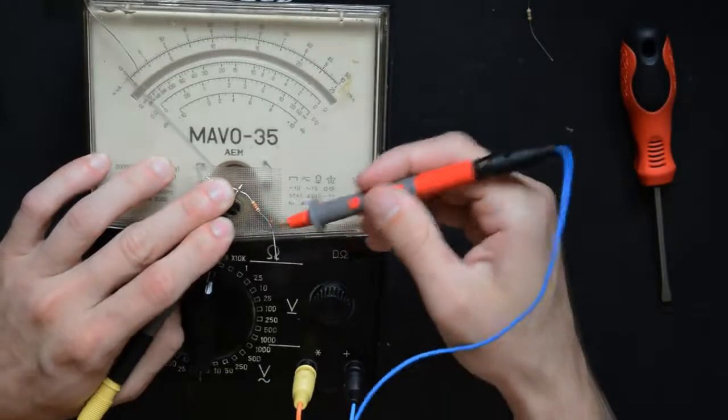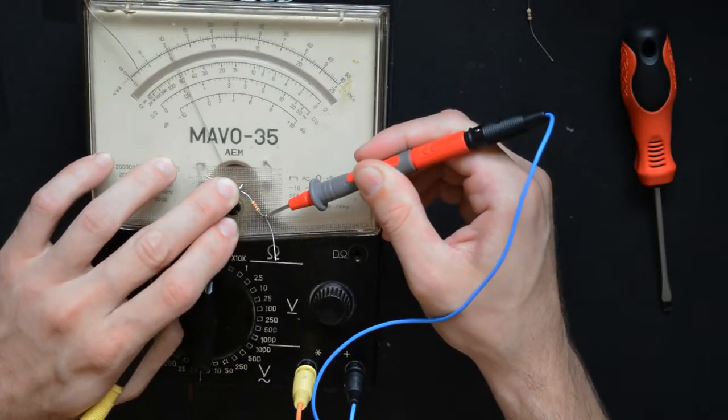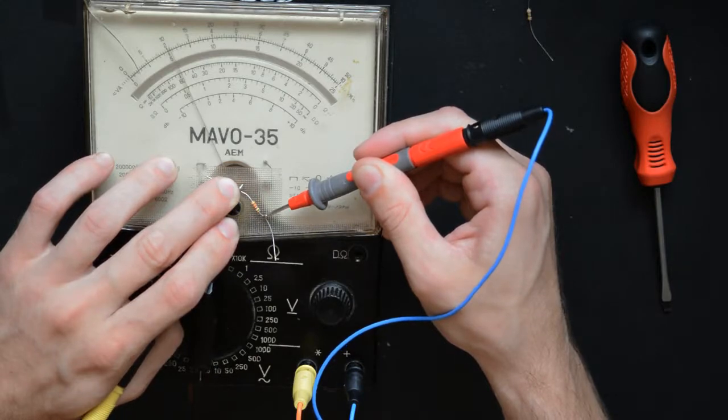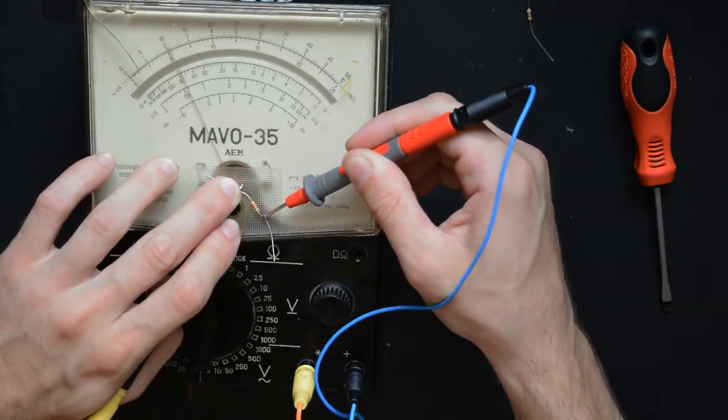And we can see it's a 5-point-something, almost 5.5 kilohm resistor.